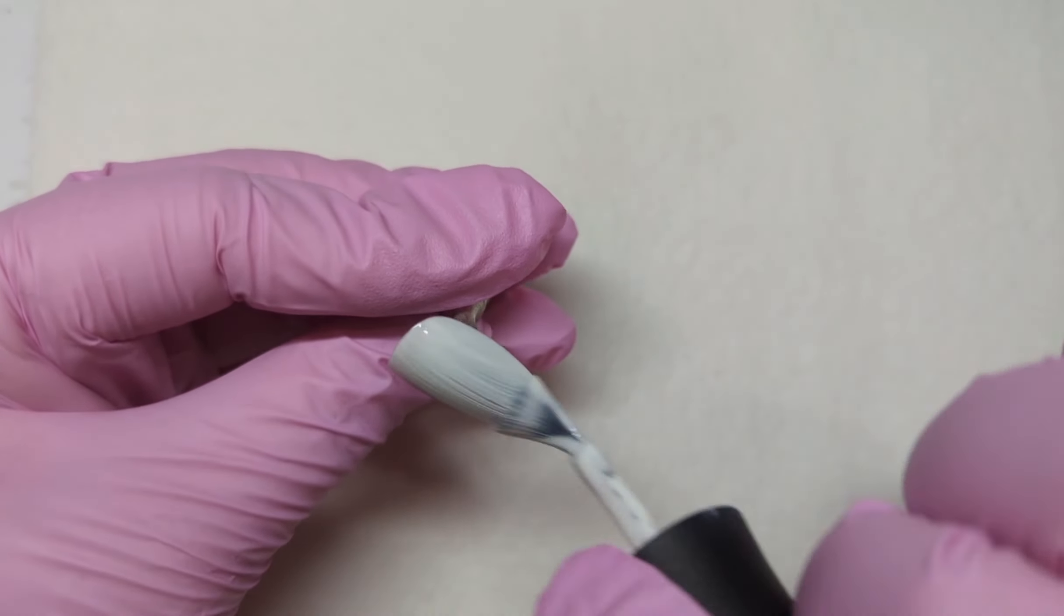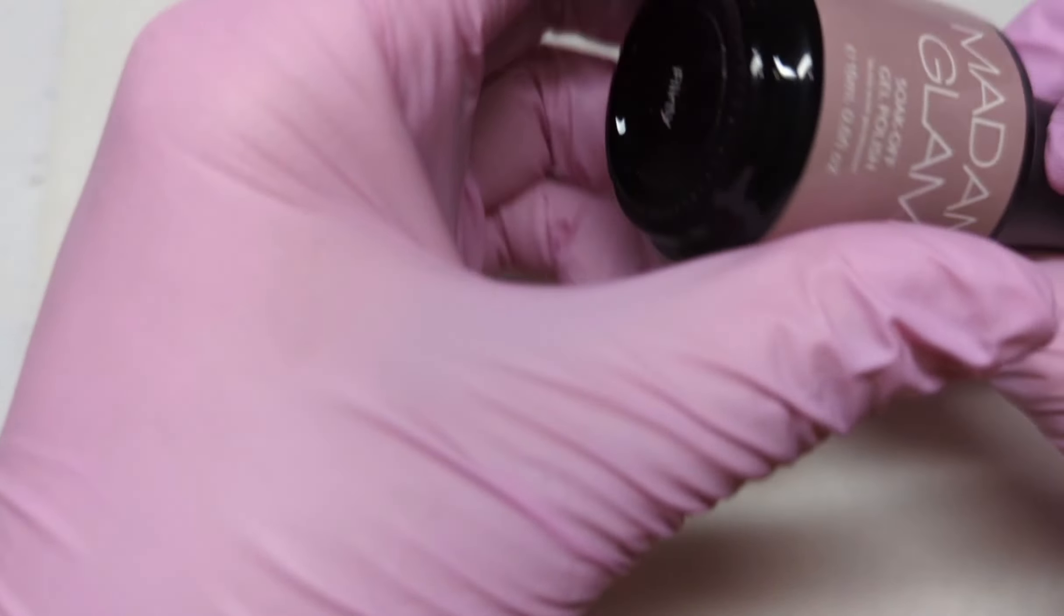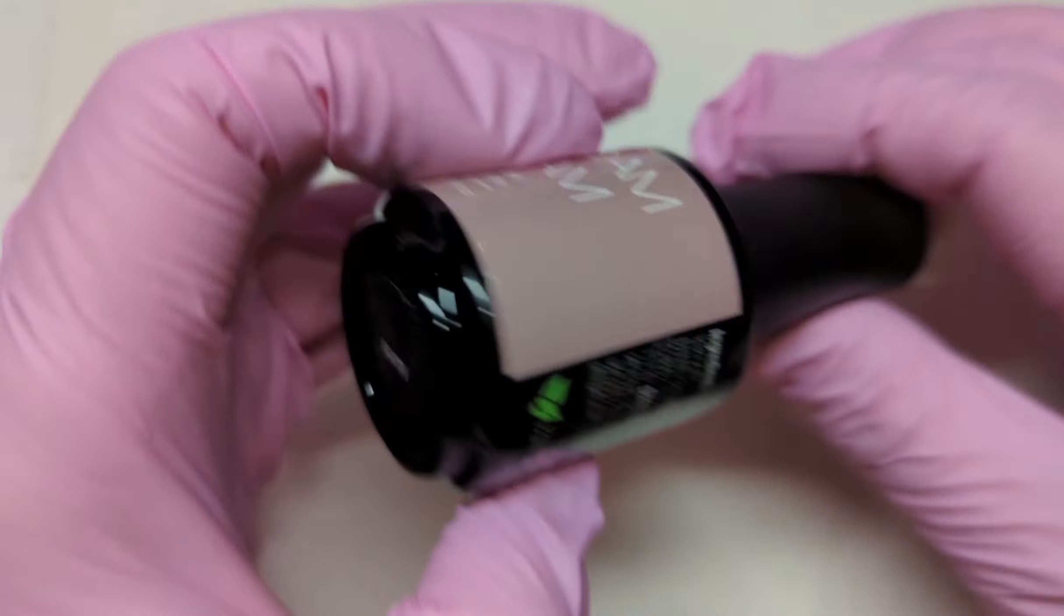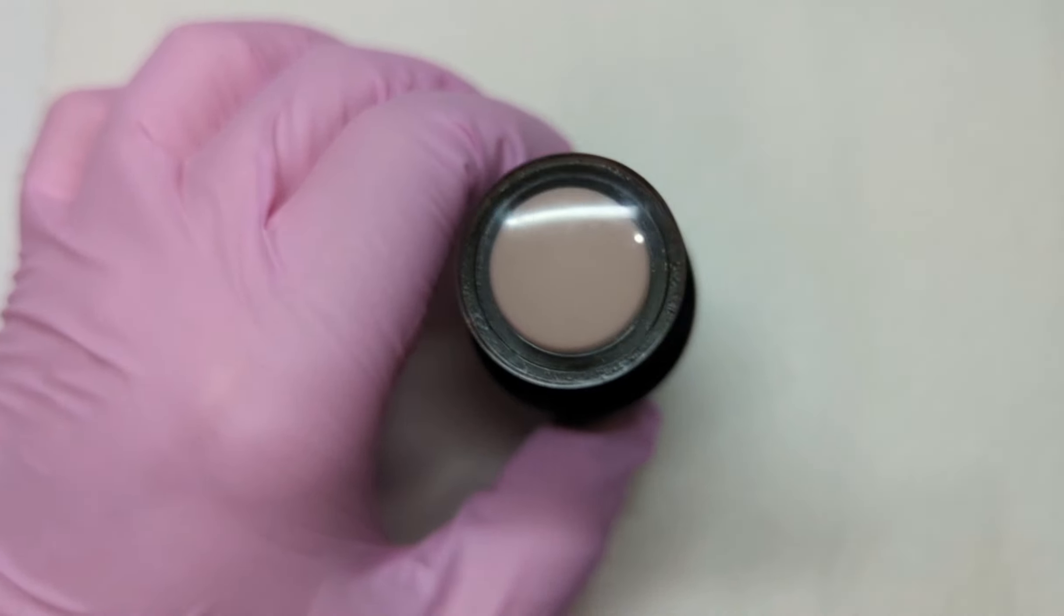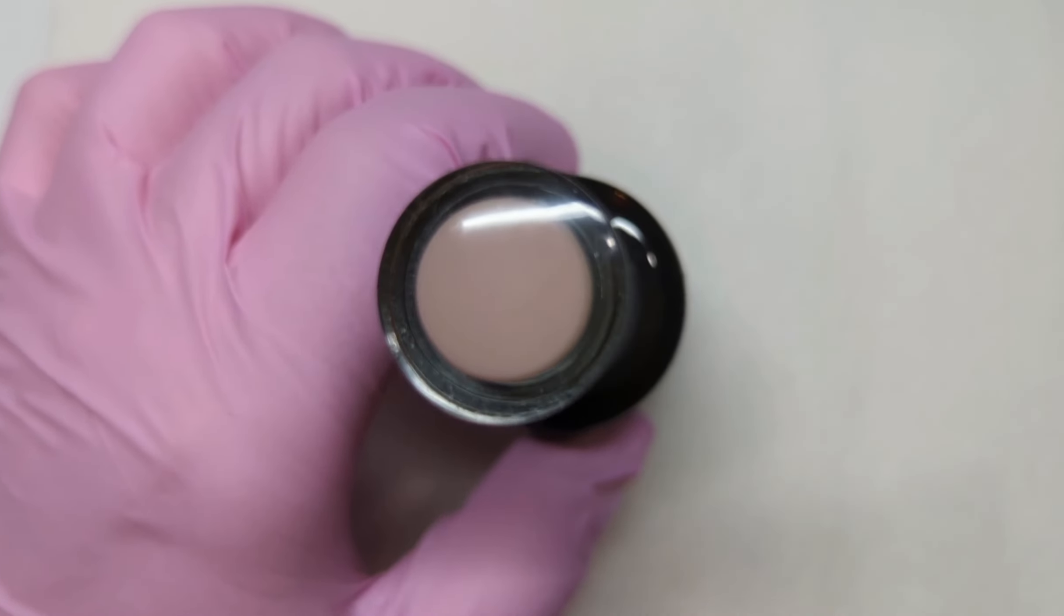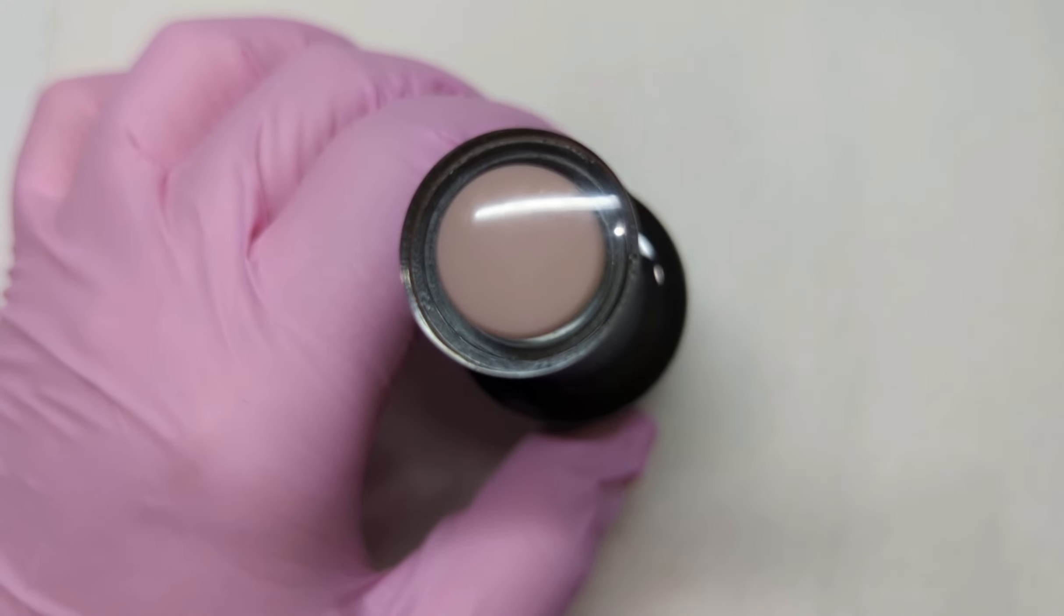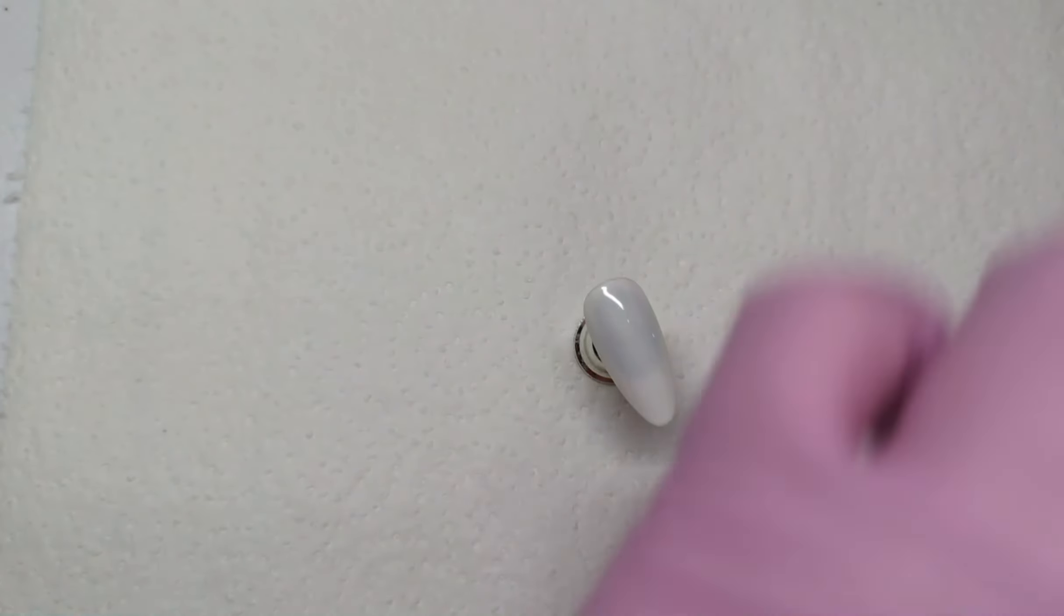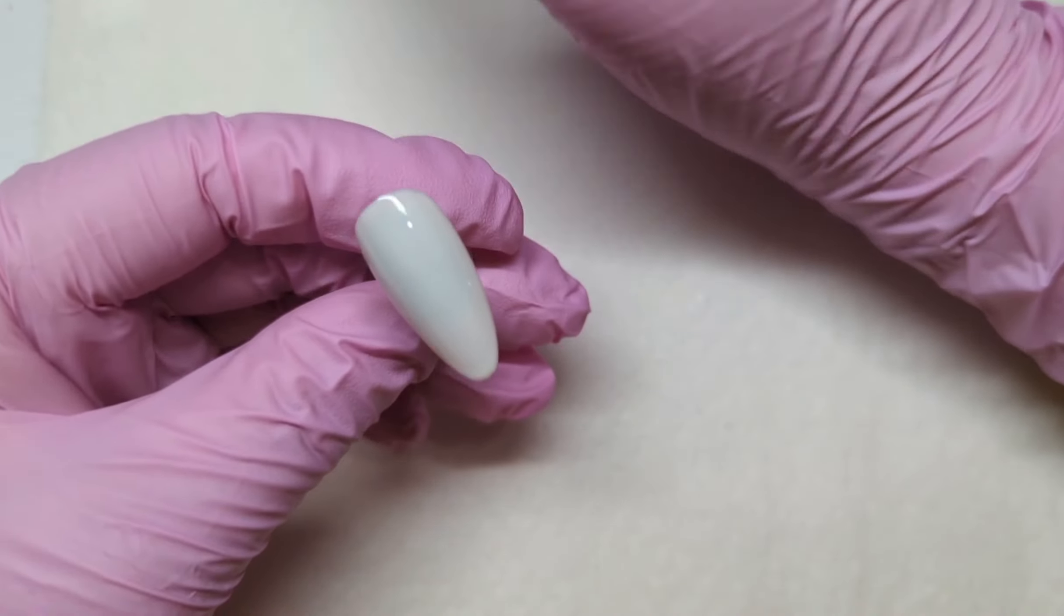I'm giving them all four of them one thin coat of white, curing in the lamp, and then I'm going to go over with this which is Flirty from Madam Glam which is like a transparent nude. That's why I went in with the white first.